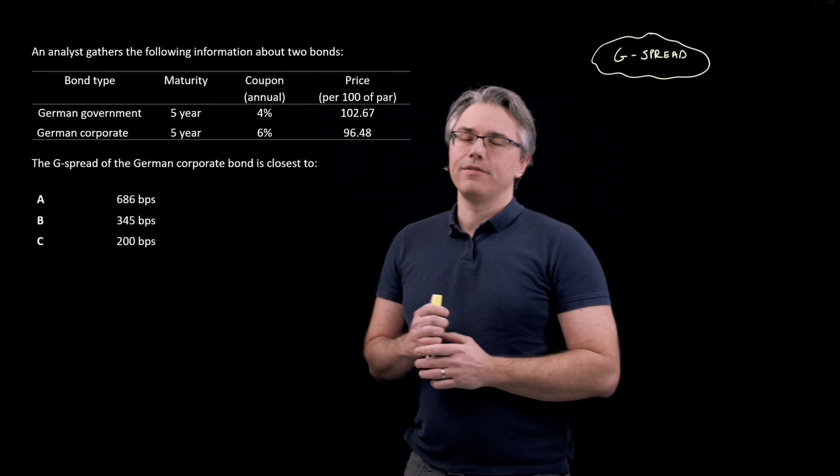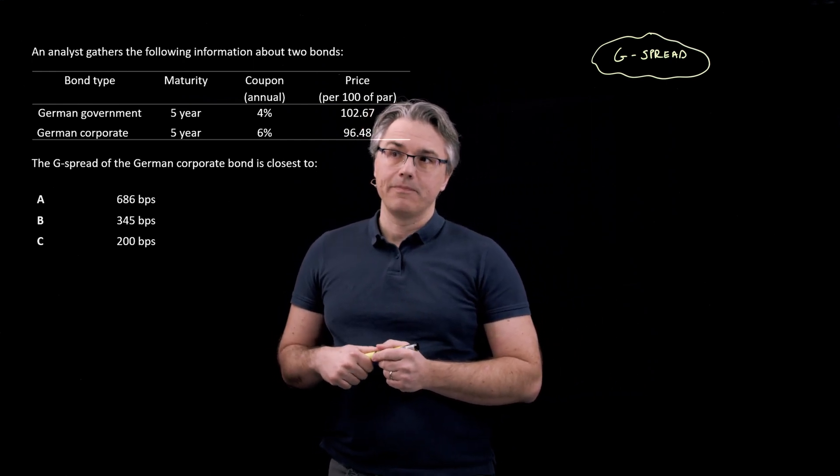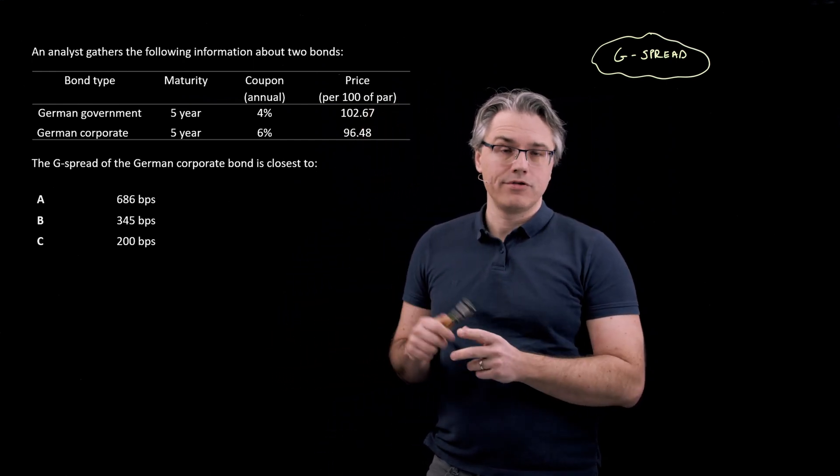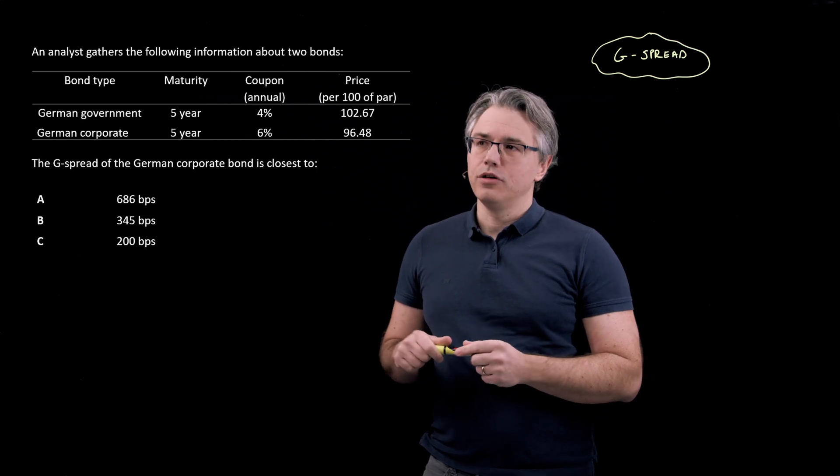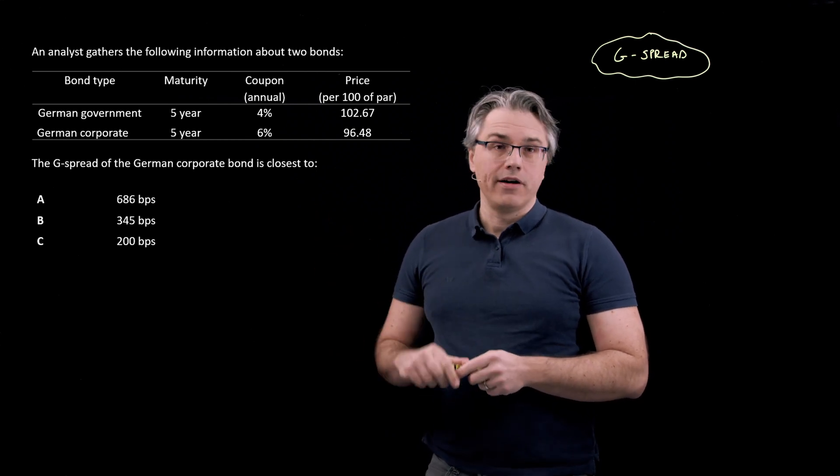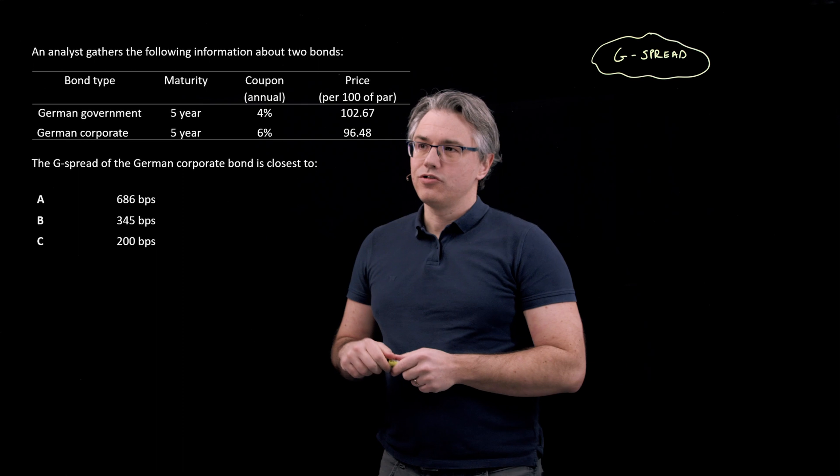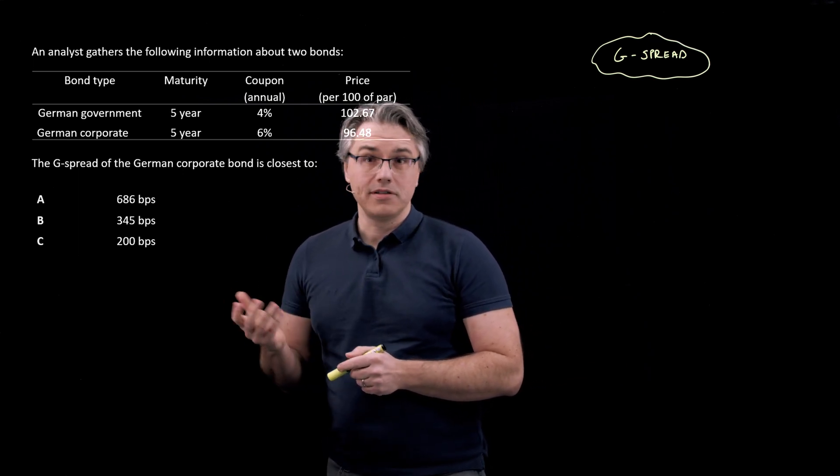different levels of coupon and different prices per 100 of par or 100 of nominal value. And we're asked to compute the G-spread of the German corporate bond and what is it closest to.